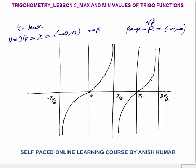tan(0) = 0. tan(90°) approaches infinity, and tan(−90°) also approaches infinity. tan(π) = 0, and tan(180°) and tan(270°) again approach infinity. So the range of y = tan x extends to infinity and minus infinity — meaning there is no maximum or minimum value for tan x.